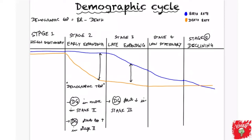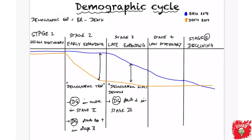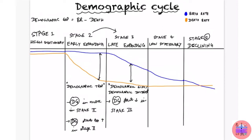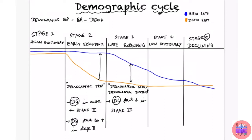Stage three is called the demographic gift or demographic dividend. Countries in stage three are said to be experiencing a demographic gift because the large population born during stage two's high birth rate period has now entered the economically productive age group. These people contribute to the country's economy, increasing national income, which is why stage three is called the demographic gift or demographic dividend.